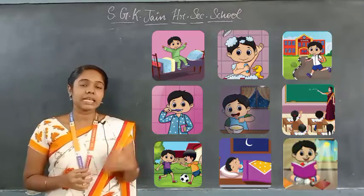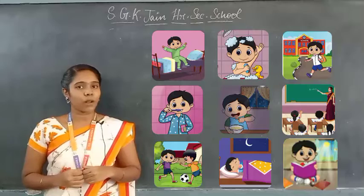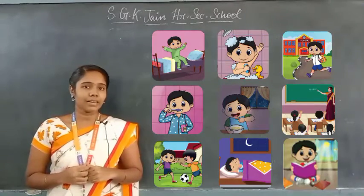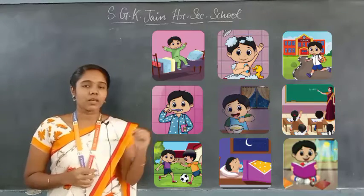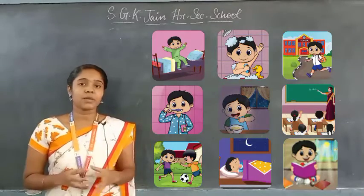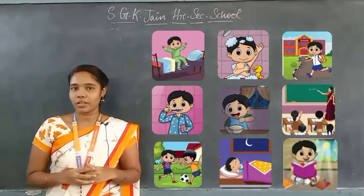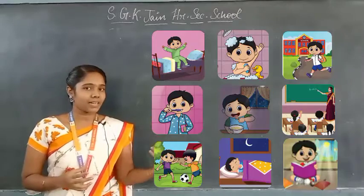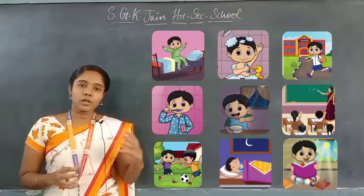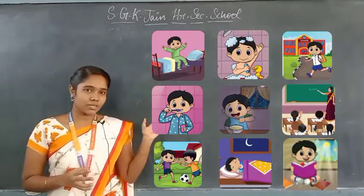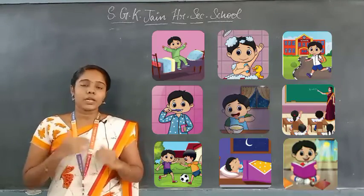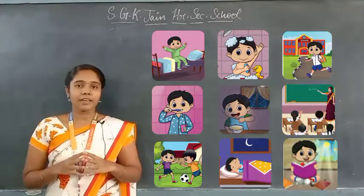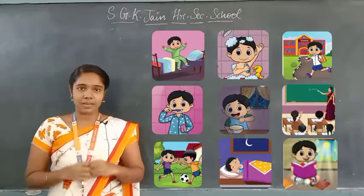This picture represents the daily activities that you do from morning to night. But there is one mistake here — these pictures are in jumbled form, that means they are not in correct order. You have to correct it and tell me what are all the activities that you will do from morning to night.